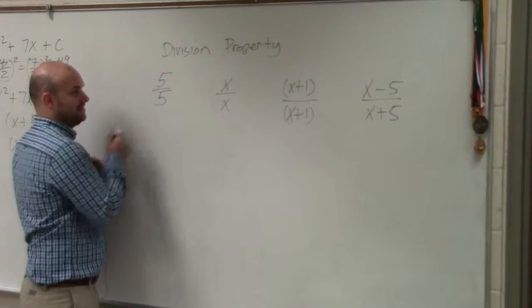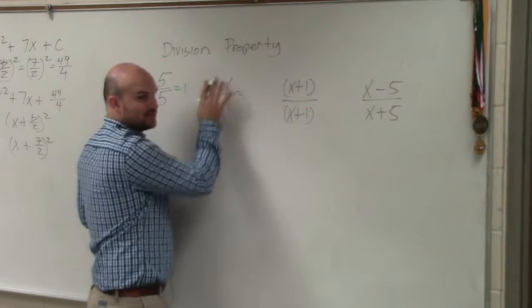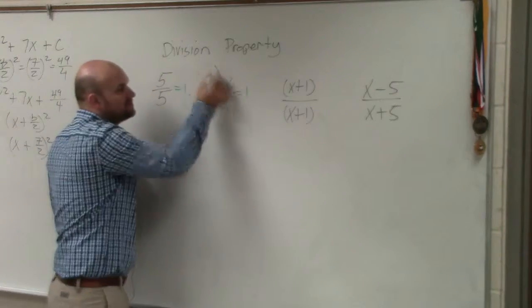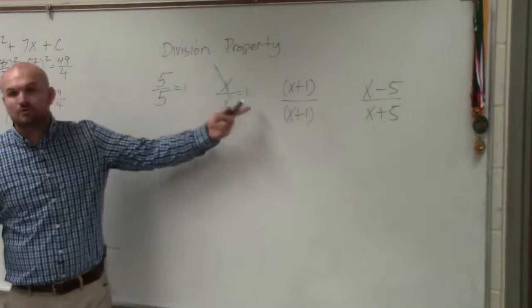5 divided by 5 is 1. It works with numbers. It works with variables. x divided by x simplifies to 1. A lot of times we just do something like that, right? You could say like cancels out, but they don't really cancel out, they just equal to 1.